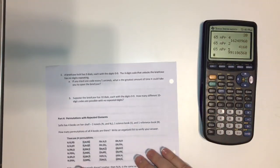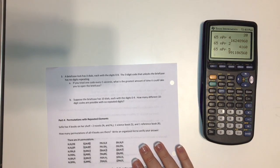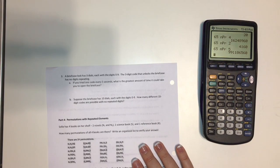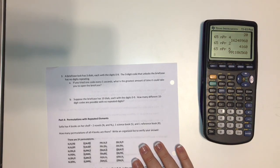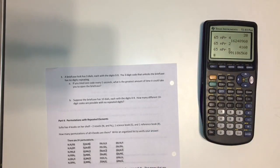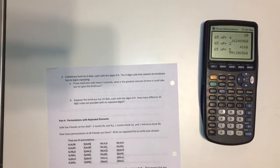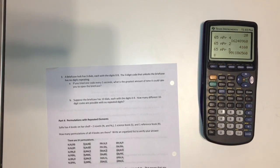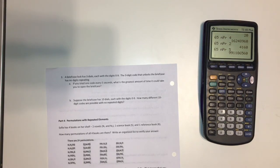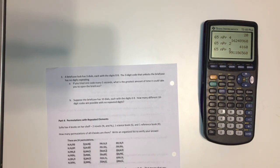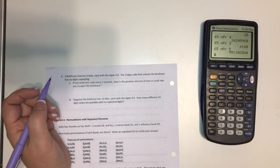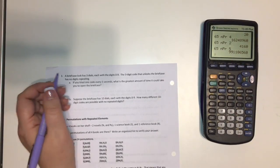And then, now on the back, a briefcase lock has three dials, each with the digits zero through nine. The three-digit code that unlocks the briefcase has no digits repeating. If you tried one code every five seconds, what is the greatest amount of time it could take you to open the briefcase? So we're going to have to figure out how many different permutations there are. And I know we learned about combination locks. It's actually not a combination. It's actually a permutation.